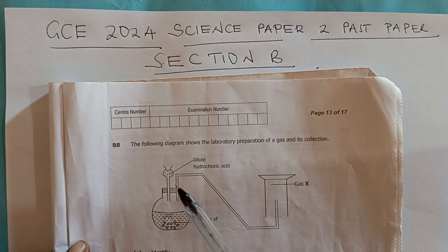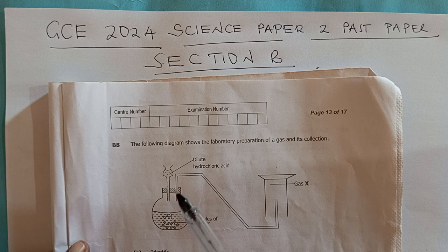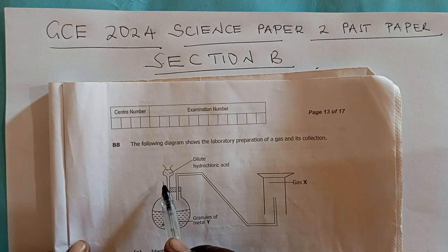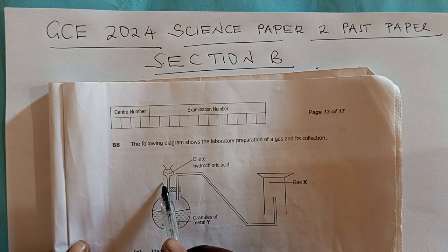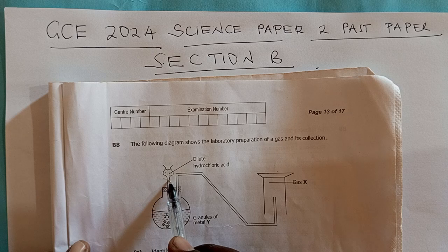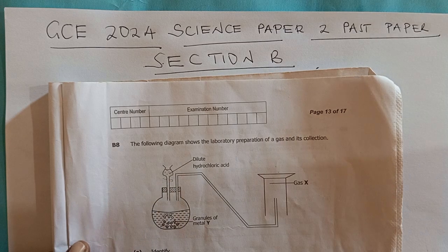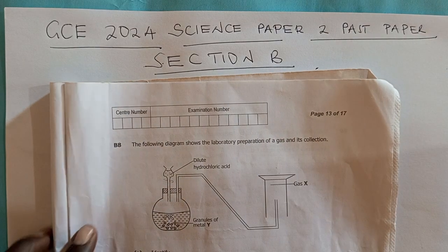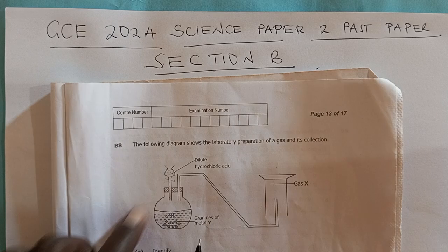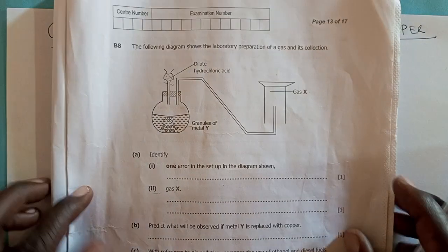But again, this is a thistle funnel and it usually has a tap here. So we have noticed that the tap is missing. This is a thistle funnel but it doesn't have a tap. Okay, so now we move on to the question.